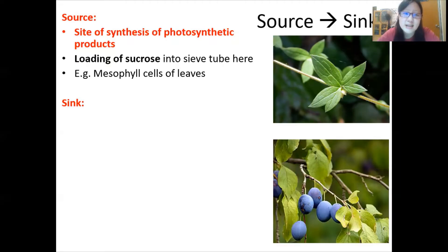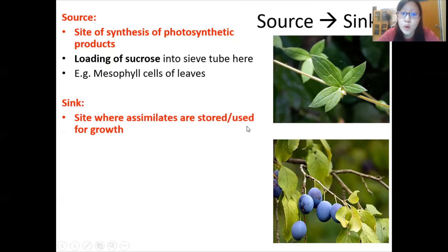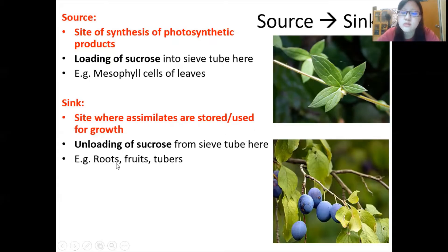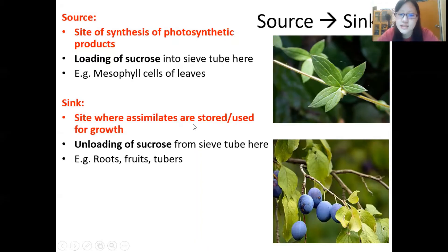Now let's look at the sink. The sink is the site where assimilates are stored or used for growth. This is where the sucrose is unloaded from the sieve tube and then stored or used there. Examples could be roots or tubers — tubers are like potatoes — fruits, etc., and wherever needs those assimilates and stores them.